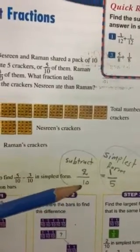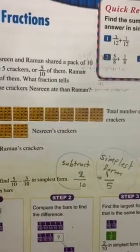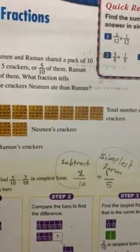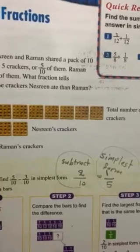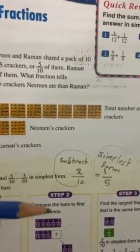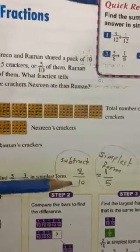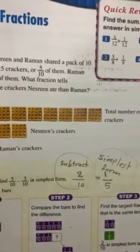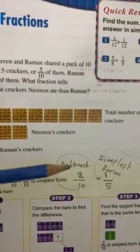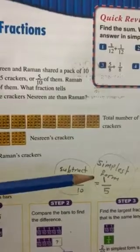Why? Because we have to find the greatest common factor or find the number that can be divided for the top and the bottom at the same time. So what is the greatest number that can be divided for two and ten at the same time? It is two. Yes, very good. How many twos in two? One.